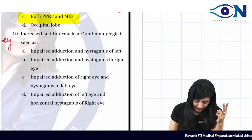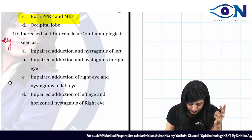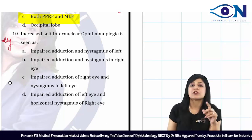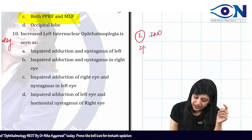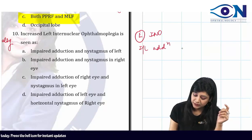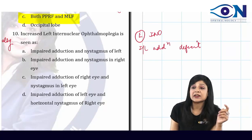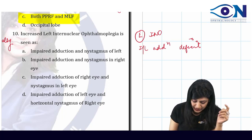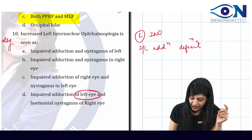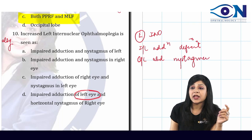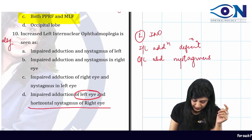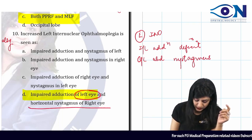Then: left internuclear ophthalmoplegia is seen as — if I have left INO, I will have the ipsilateral adduction deficit, meaning impaired adduction of the left eye, and we will have contralateral abduction nystagmus — nystagmus of the right eye. Therefore, the answer to this question will be D.